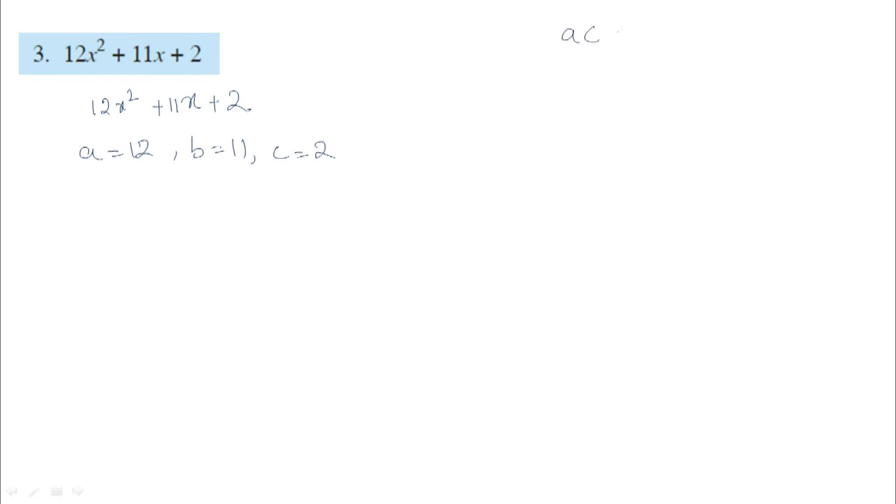First, find the AC product: 12 into 2 equals 24. The B term is 11. If we add these both, the answer should be 11, and if we multiply these both, the answer should be 24.